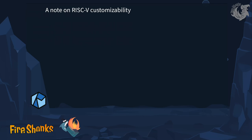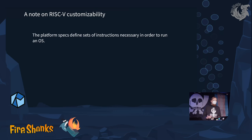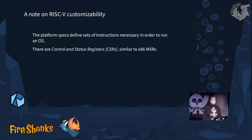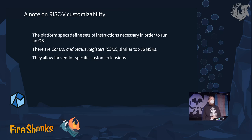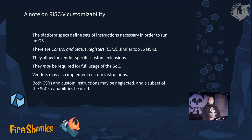Addressing a question asked two days ago — the RISC-V specification defines that manufacturers can add their own instructions to processors. You can also use control and status registers, which is a mechanism specific to RISC-V to expand platform features. Of course vendors can do this, and there are vendors that keep this closed and do not disclose these features. It may be required for full usage, but it can also be that you might not need them and can only use the base functionality.